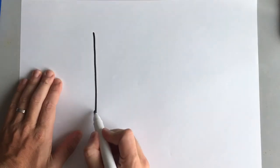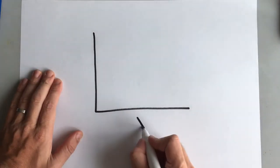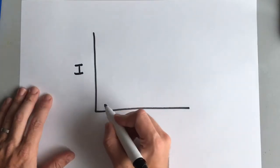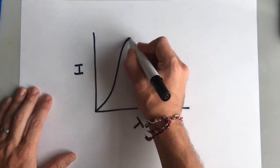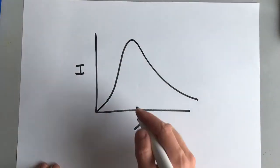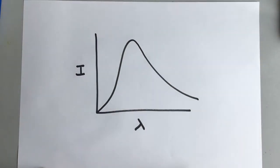So we know from unit 8 that a blackbody is a perfect emitter of radiation and we know that the blackbody curve looks something like that, with a peak wavelength corresponding to the temperature.